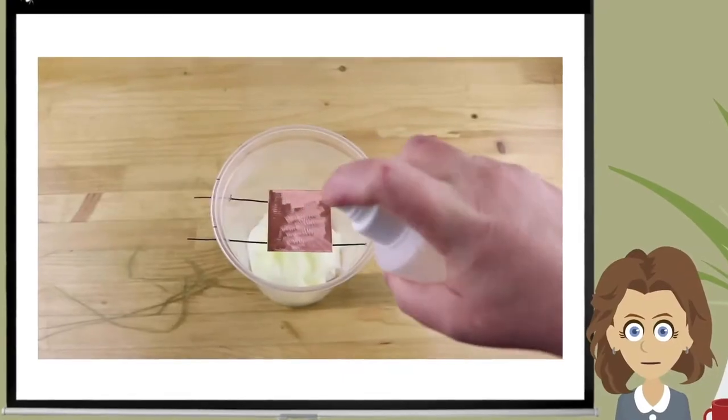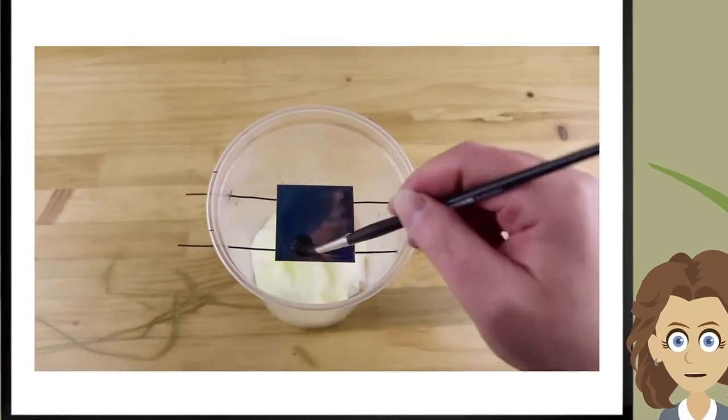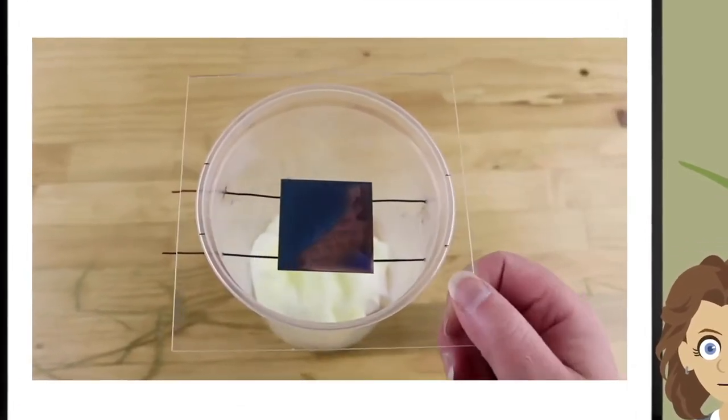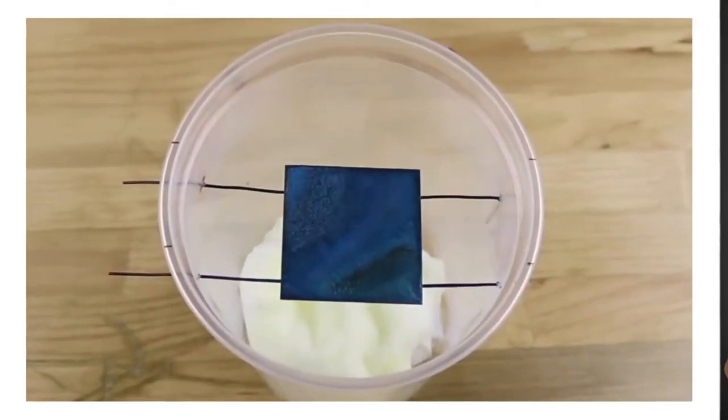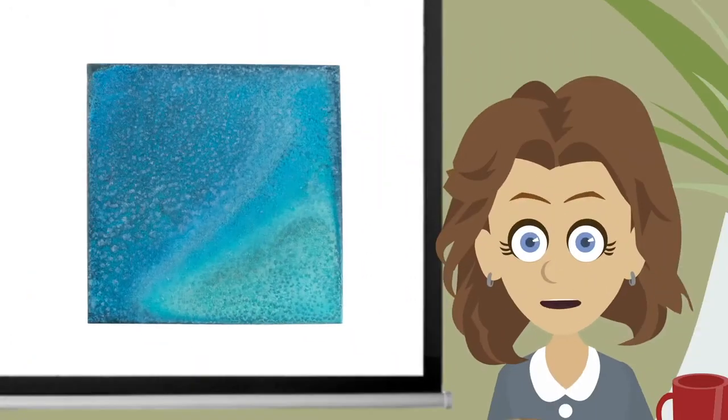So I gave my freshly emmeried bit of copper four pumps of an ammonia salt solution, and let cook for two hours in a paper towel fume chamber. And the results? Very good and even patina coverage.